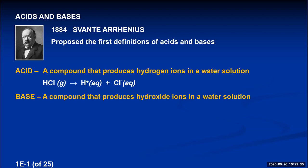Arrhenius proposed that a base was any compound that, if you dissolve it in water, produces hydroxide ions. This would be an explanation for why sodium hydroxide is a basic substance. When you take crystals of sodium hydroxide and dissolve them in water, as do all ionic compounds, the ions separate. So you produce sodium ions and the species responsible for basic solutions — which Arrhenius proposed was the hydroxide ion.